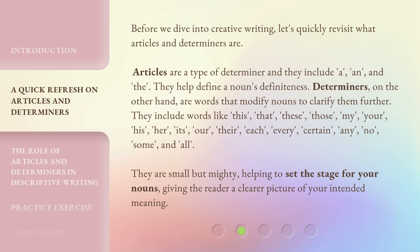Determiners, on the other hand, are words that modify nouns to clarify them further. They include words like this, that, these, those, my, your, his, her, its, our, their, each, every, certain, any, no, some, and all. They are small but mighty, helping to set the stage for your nouns and giving the reader a clearer picture of your intended meaning.